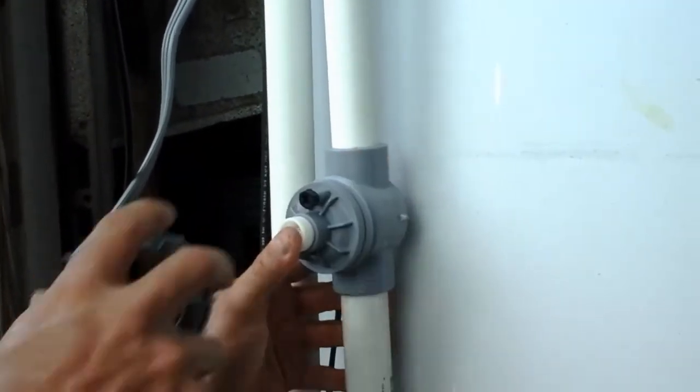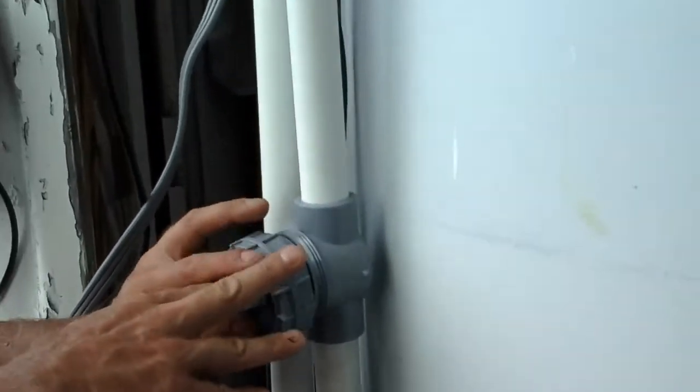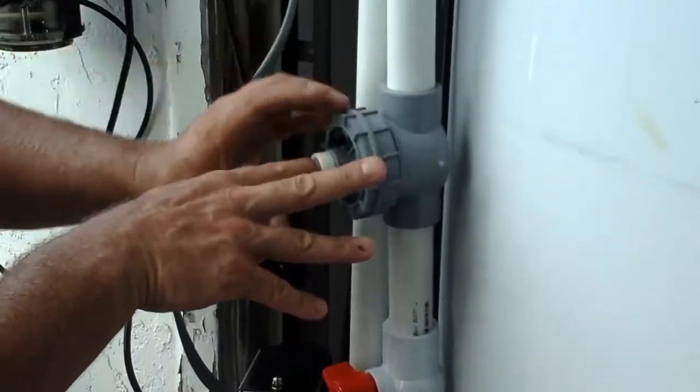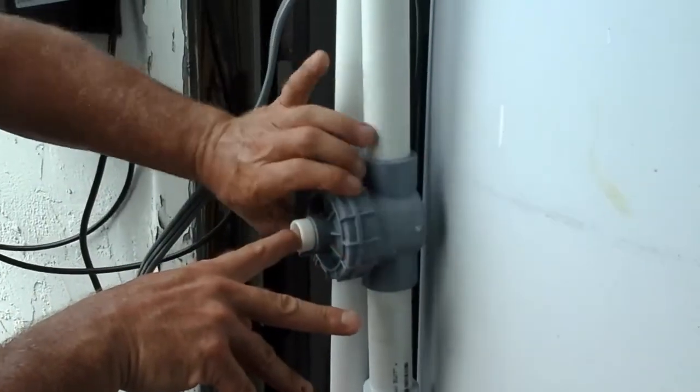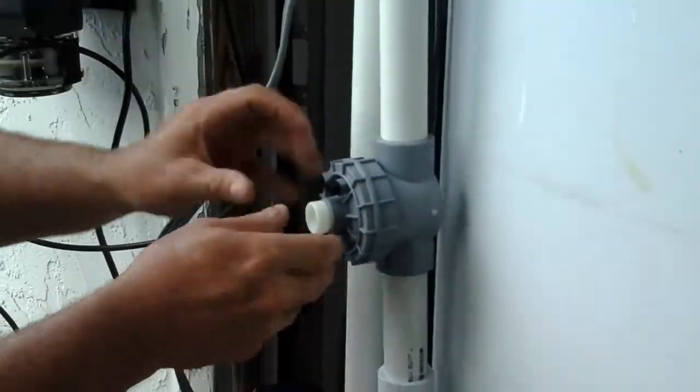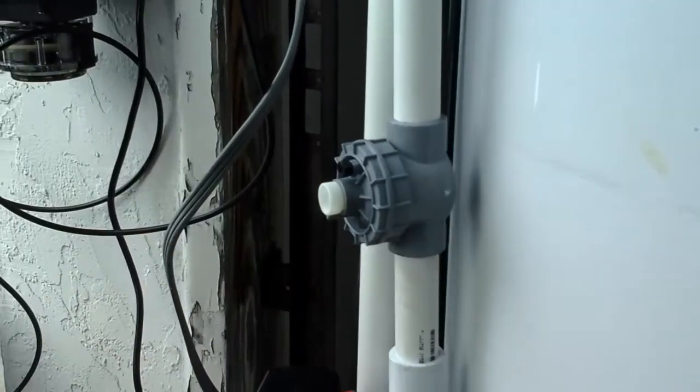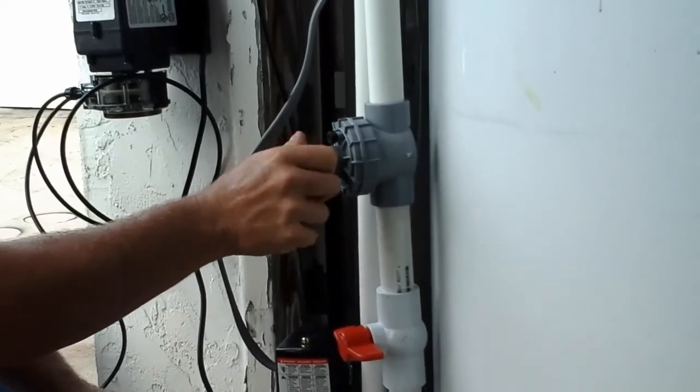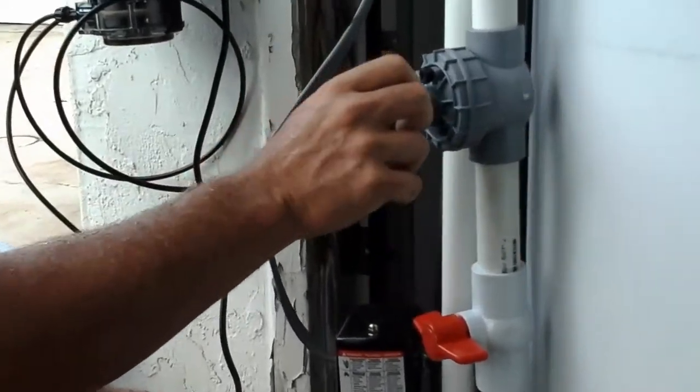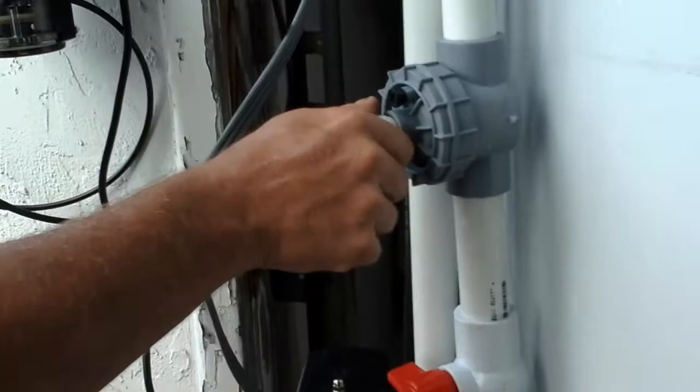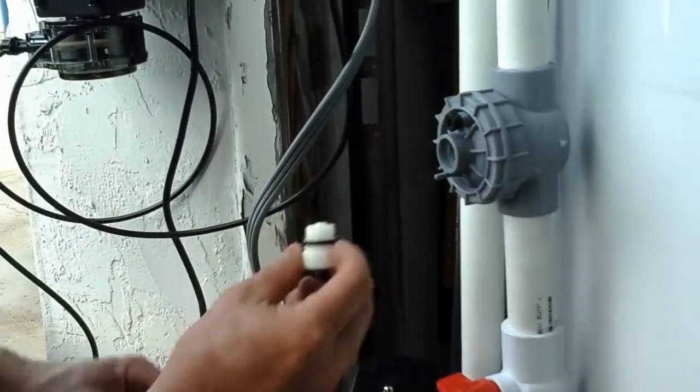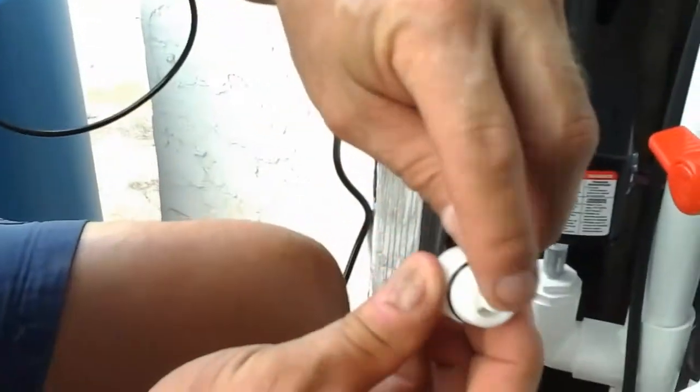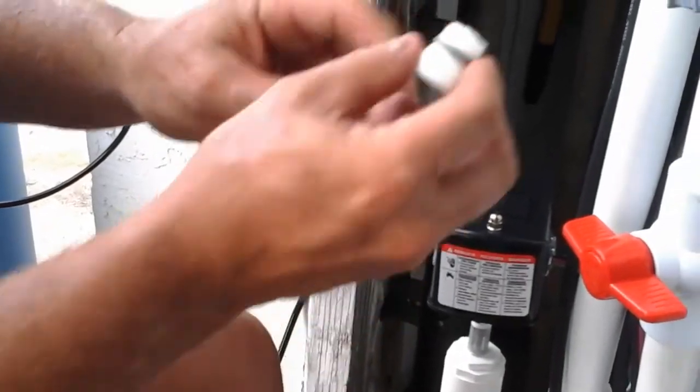Hold it in and screw your nut back on. Now, this particular valve has an outer ring that, if you open this up with the coil on, will allow water to manually fill. You want to make sure that's not plugged and the O-ring's okay.